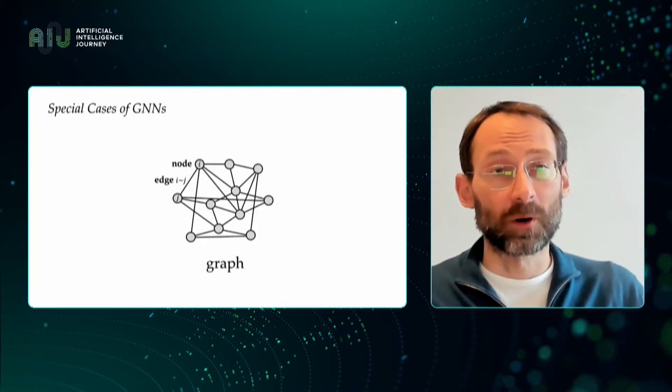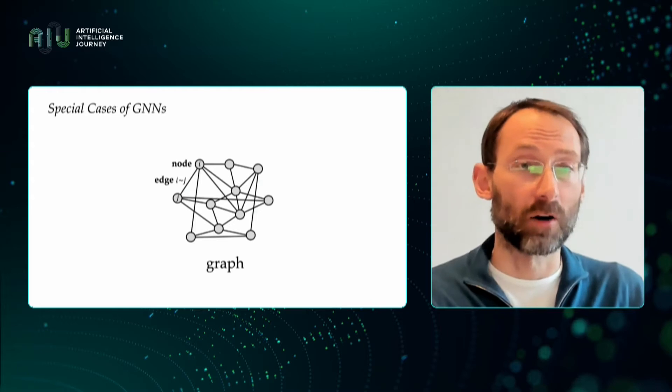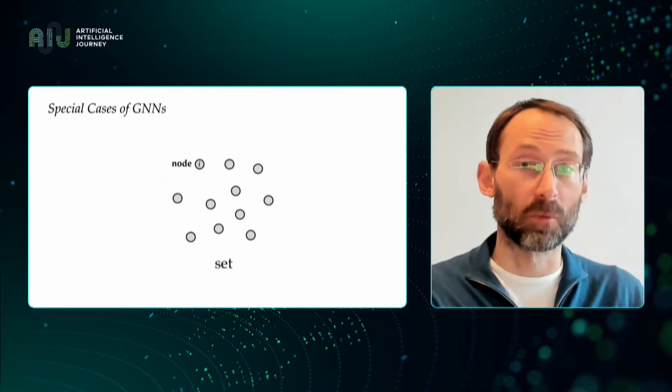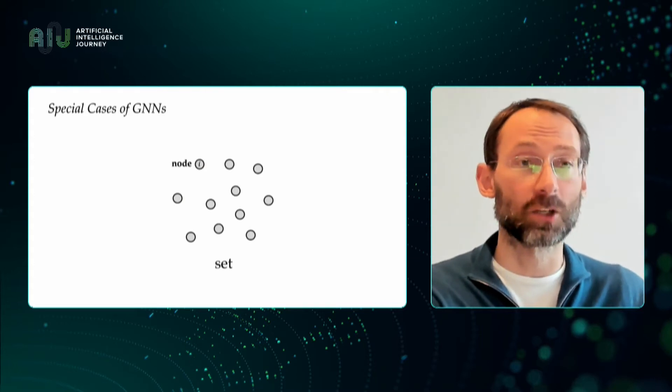Let me say a few words about some interesting special cases of graph neural networks. In the first case, if we remove all the edges from the graph, we get a set, and sets share common properties of graphs in the sense that they're unordered. In this case, the most straightforward approach would be to apply an independent function at every element of the set. This architecture is known as deep sets or point nets in the machine learning community.